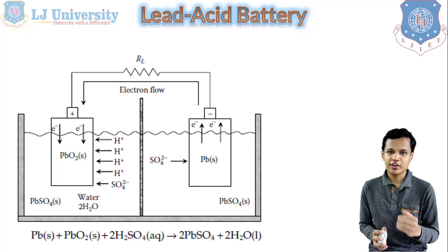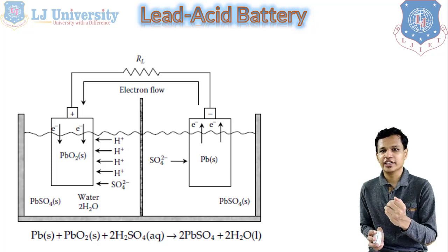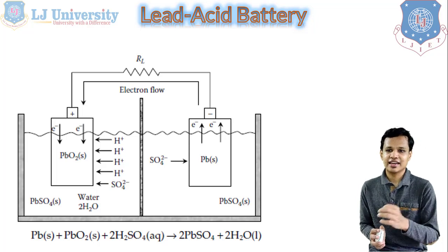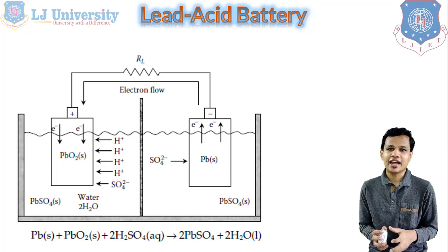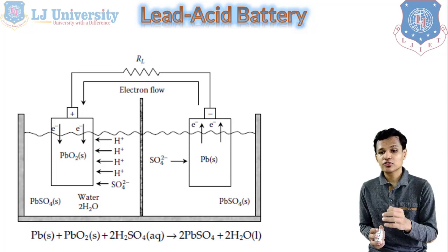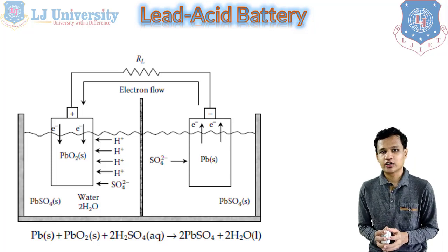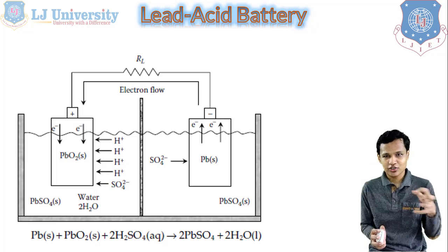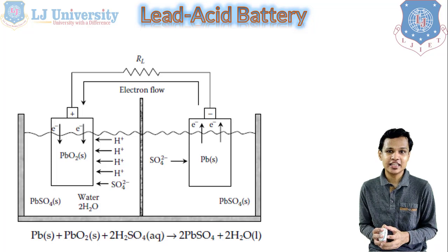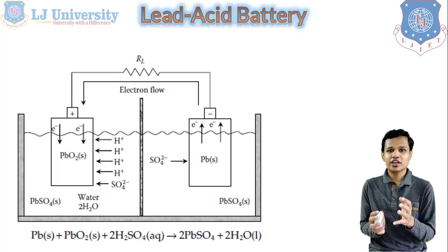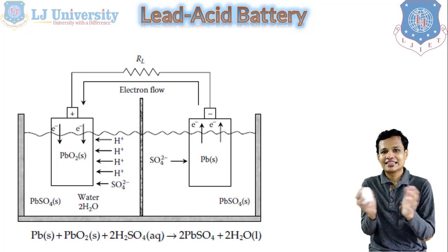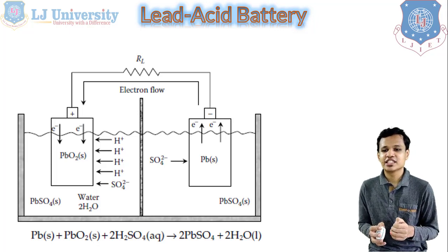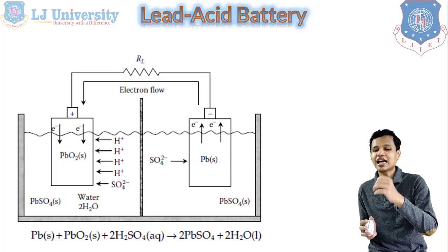In the lead acid battery, both electrodes are made from lead — one is PbO₂ and the other is Pb (solid). PbO₂ is connected at the positive electrode and Pb at the negative electrode. The electrolyte used is H₂SO₄. A separator is kept between the two electrodes — it is a porous material through which hydrogen and oxygen ions or electrons can pass easily, enabling discharging and charging. The separator also prevents the positive and negative electrodes from contacting each other, which would cause a short circuit.